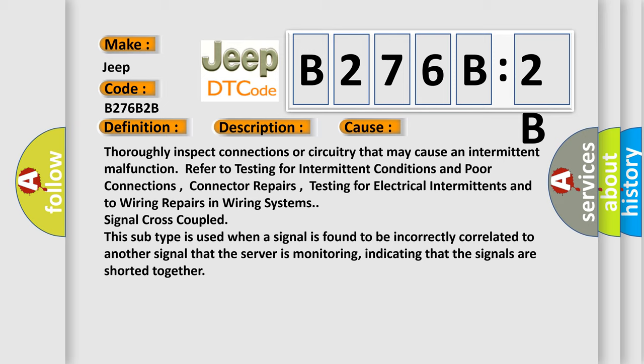The second byte is Thoroughly inspect connections or circuitry that may cause an intermittent malfunction. Refer to testing for intermittent conditions and poor connections. Connector repairs Testing for electrical intermittence and to wiring repairs in wiring systems. Signal cross-coupled This subtype is used when